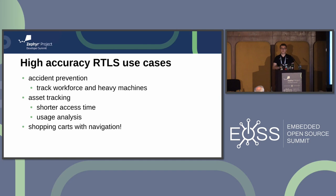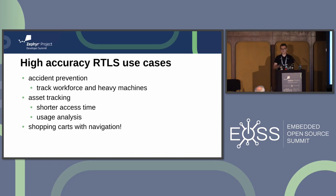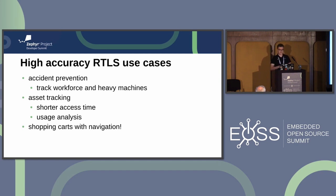Since UWB-based RTLS systems have such great accuracy, they not only improve the usual RTLS use cases but also enable new ones. For instance, such a system could be used for accident prevention — imagine monitoring workforce and heavy machines so that if anyone comes close to an operating machine it triggers an alarm. It also enables asset tracking in factories or warehouses, making assets much quicker to find when needed, and by tracking historical usage and movement patterns you could optimize how assets are used and placed. I also came up with smart shopping carts with a navigation system that could navigate you through the shortest path around the store — I first thought of it as a joke but then realized it could actually be useful, so please don't patent it.